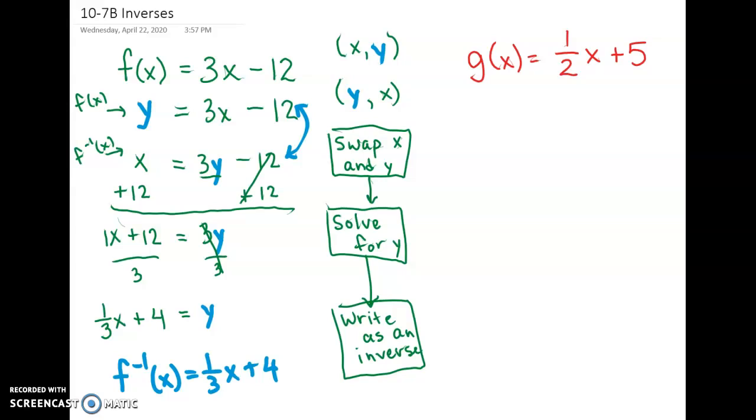We're going to do those same steps for g. So the first thing we're going to do is remembering that the input is x, the output is g(x). We're going to rewrite this as y equals 1 half x plus 5. Now we're going to swap x and y.